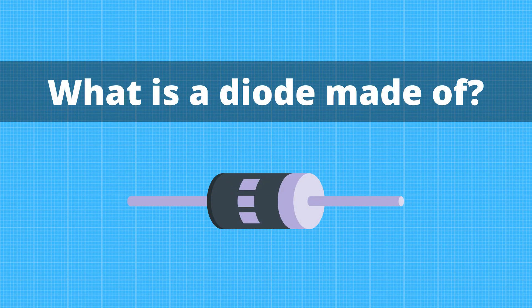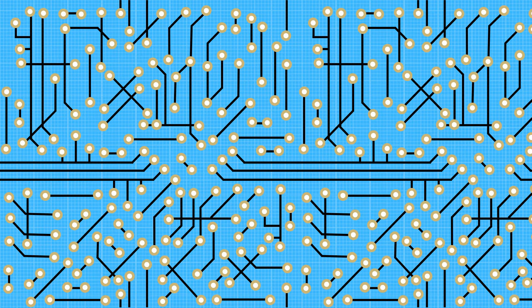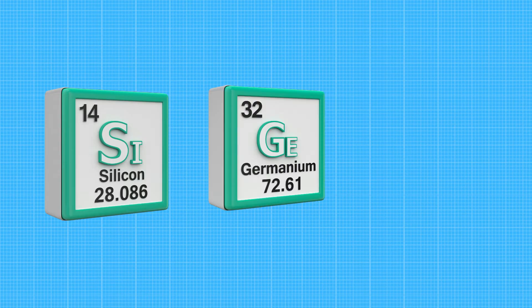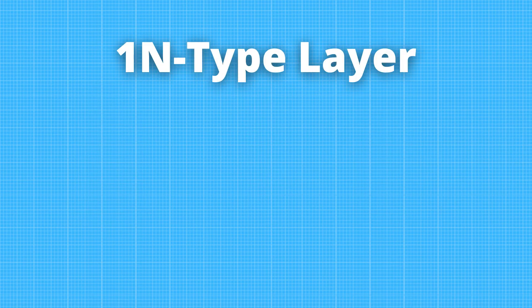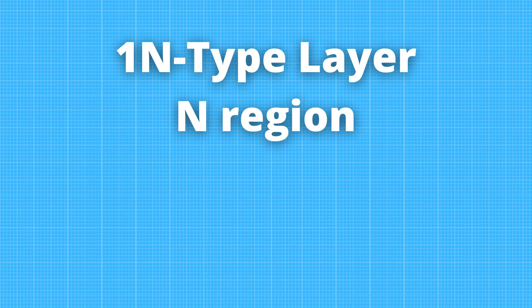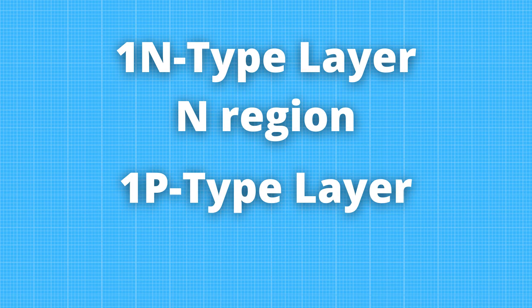The diode is made of silicon, but there is another material. It is a type of semiconductor device with two types of semiconductor materials: silicon or germanium, and a p-n junction. The diode has one n-type semiconductor layer called an n-region, and one p-type semiconductor layer — called a p-region.